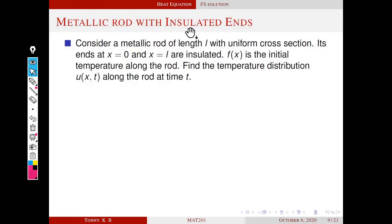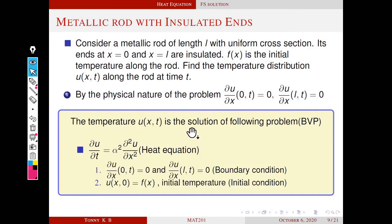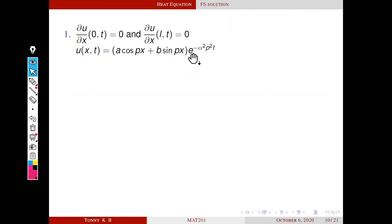Next we consider the heat problem with insulated endpoints. The mathematical condition for insulated endpoints is that the temperature gradient equals zero at both ends: ∂u/∂x(0,t) = 0 and ∂u/∂x(L,t) = 0. We consider the separable solution corresponding to k negative, since the steady state and the k-positive cases are not consistent with this heat problem.